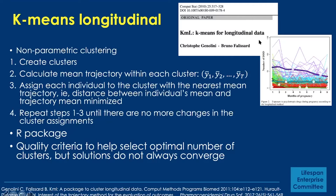I have an example of what KML looks like in the literature. This is an example of exposure to psychotropic medications during pregnancy. We can see different individual trajectories in the thin lines and grouped trajectories in the thicker lines, representing the average dose groups across pregnancy months.